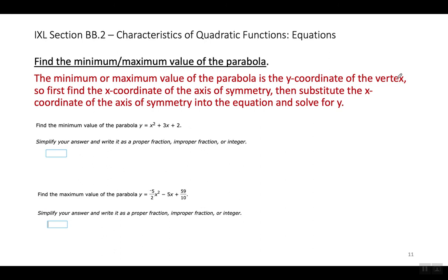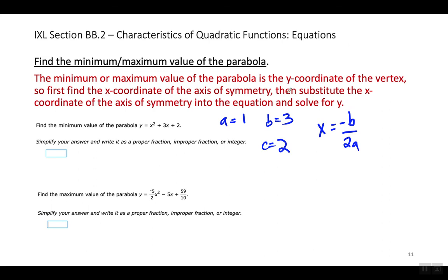Look at the first question: find the minimum value of this parabola. A equals 1, B equals 3, and C equals 2. First, I'm going to find the axis of symmetry using the formula negative B over 2A — you should have it memorized by now. When I substitute the values, it's going to be negative 3 over 2 times 1, which gives me negative 3 over 2. So the X coordinate of the vertex is negative 3 over 2.